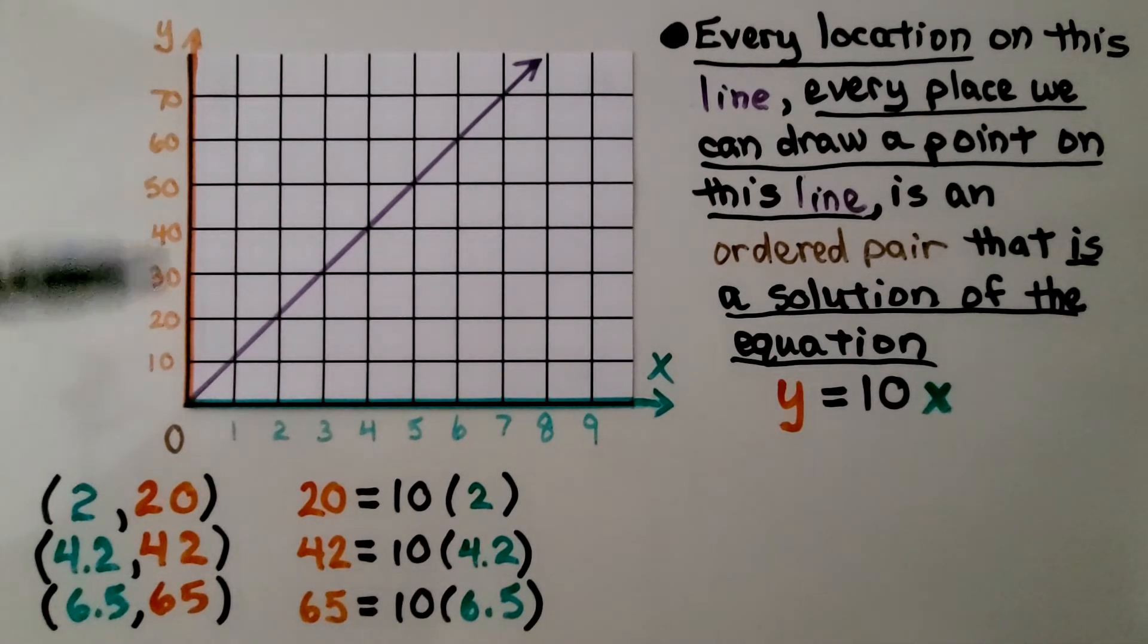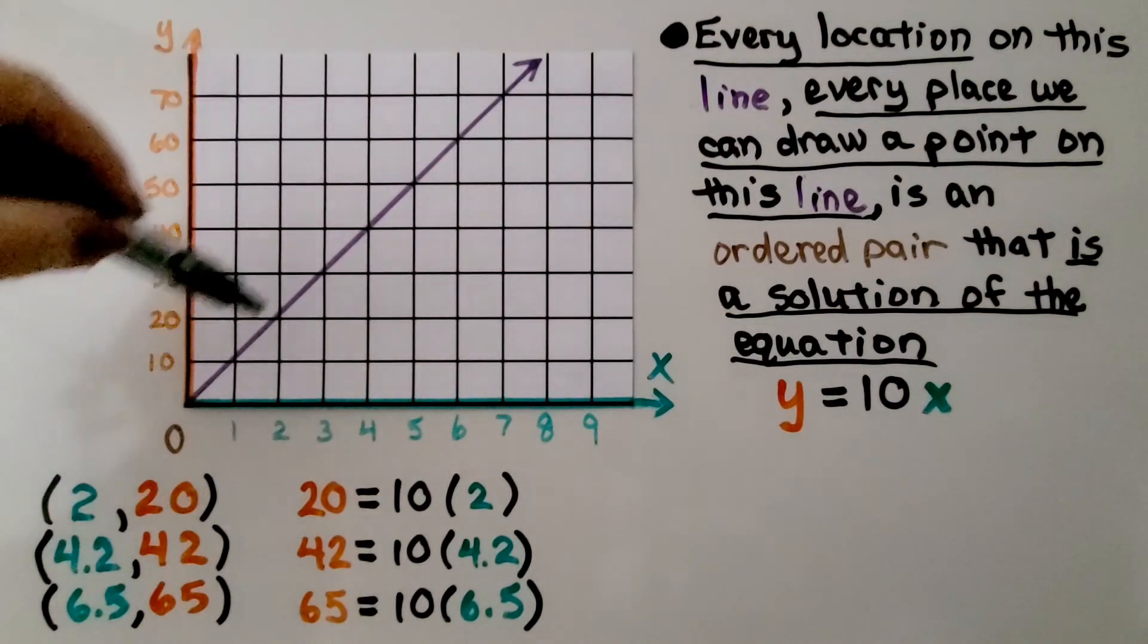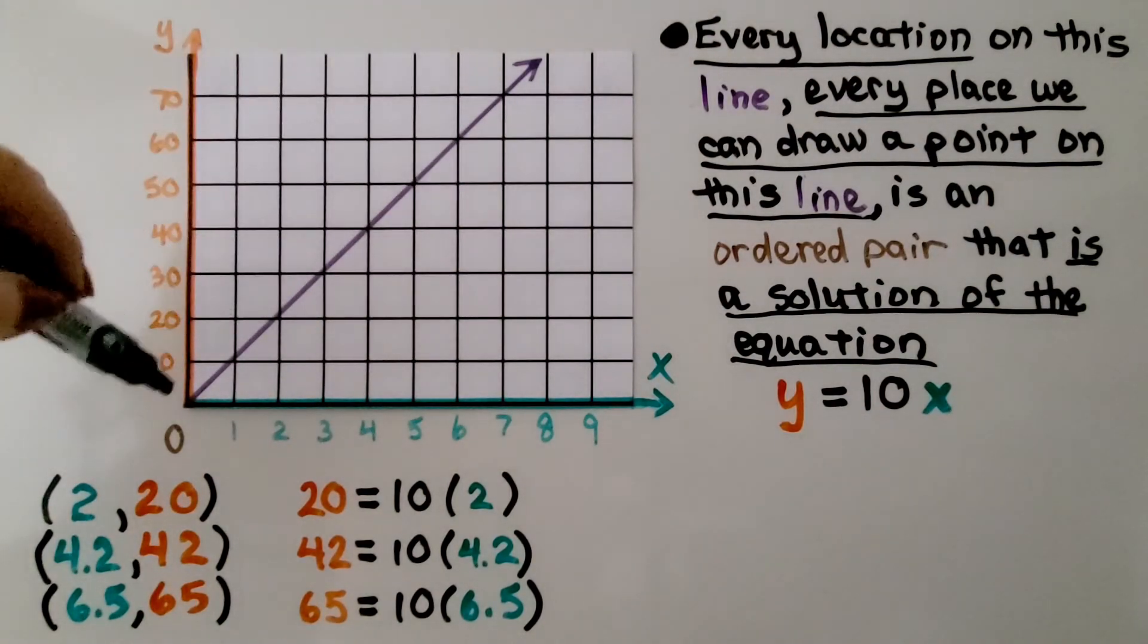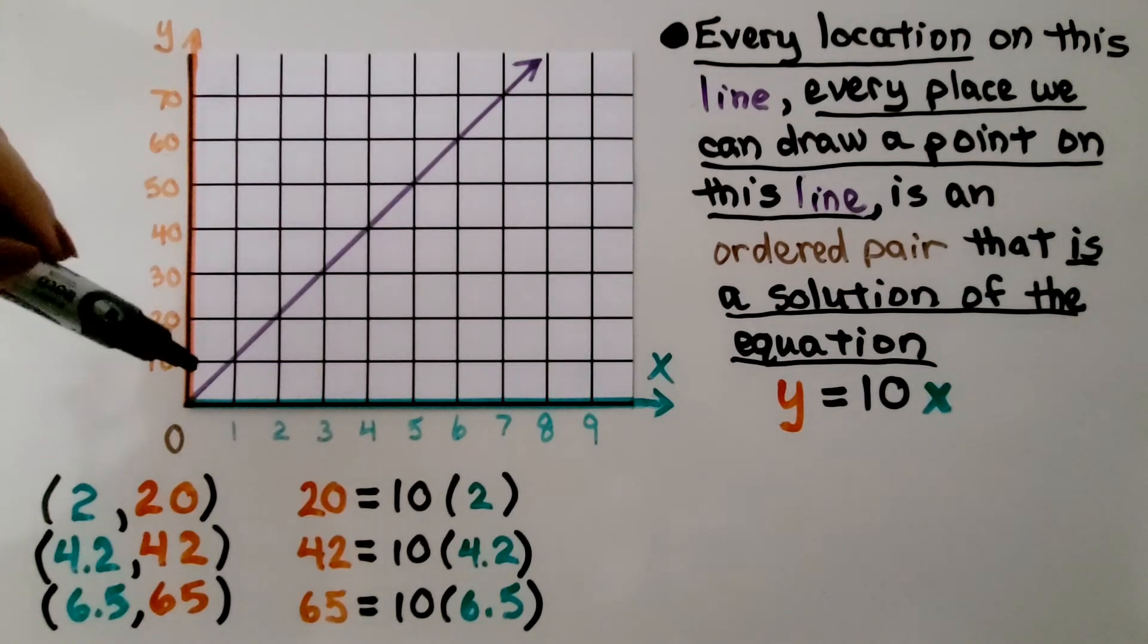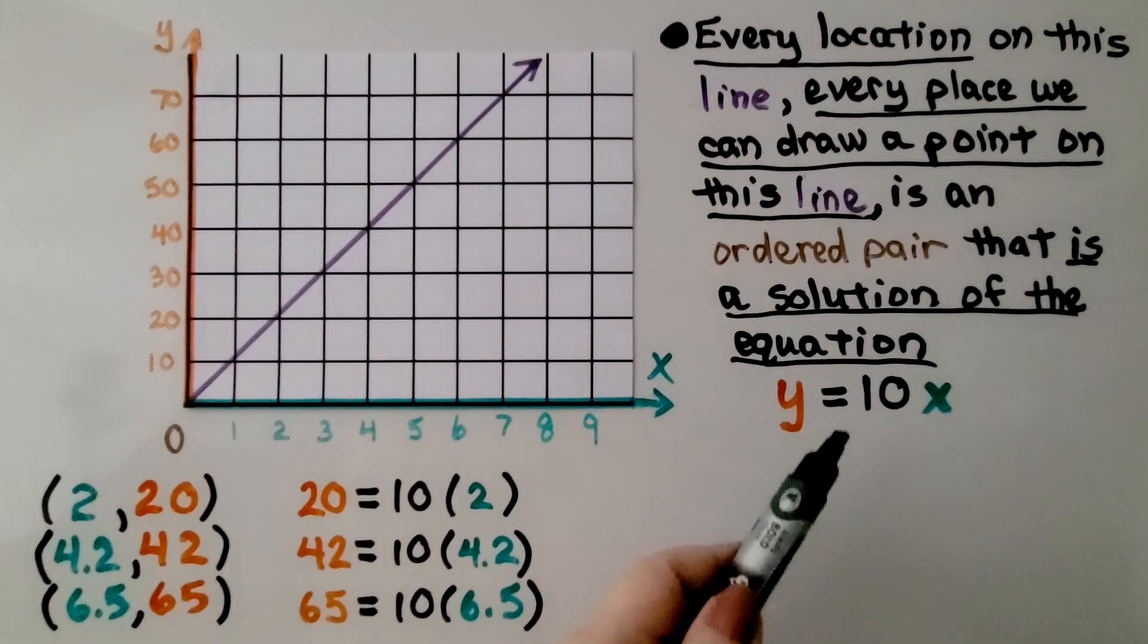The y value is equal to 10 times the x value. It doesn't matter where we plot it on the line. If there were 1,000 points on this line, we could pick any one of those 1,000 points and make an ordered pair and it would be a solution to this equation.